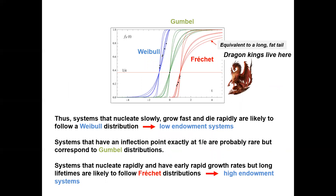Dragon kings live in the long-tailed Fréchet distribution shown in red. Systems that nucleate slowly, grow fast, and die rapidly are likely to follow a Weibull distribution — these are low-endowment systems. Systems with an inflection point exactly at 1/e are probably rare but correspond to Gumbel distributions. Systems that nucleate rapidly, have early high growth rates, and long lifetimes are likely to follow Fréchet distributions and correspond to high-endowment systems.